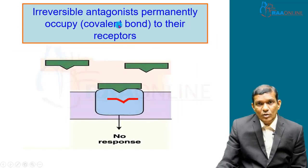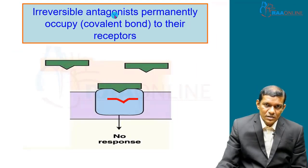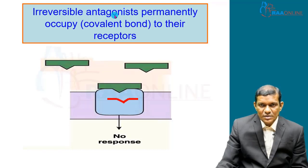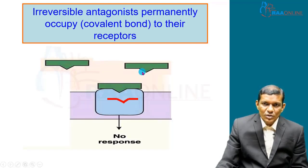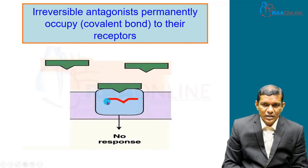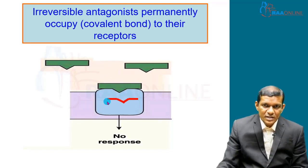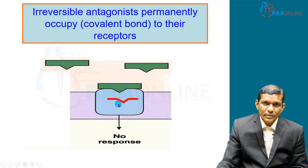An irreversible antagonist binds to the receptor in a covalent bond, which is the strongest bond. Once it binds, both the receptor and the antagonist have to be completely destroyed, and new receptors must be generated for the agonist to bind. Even if you increase the concentration of the agonist, it is not going to be useful.